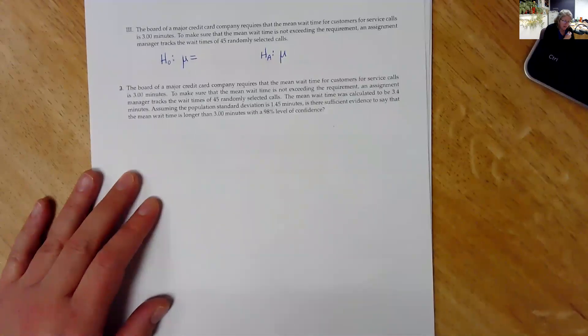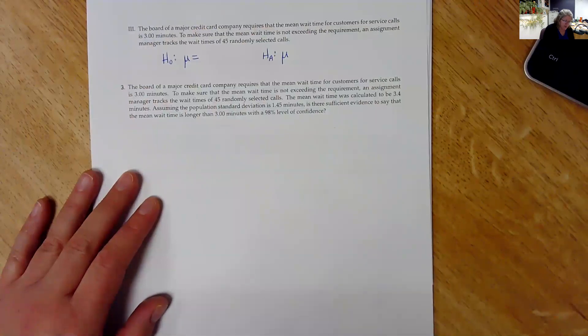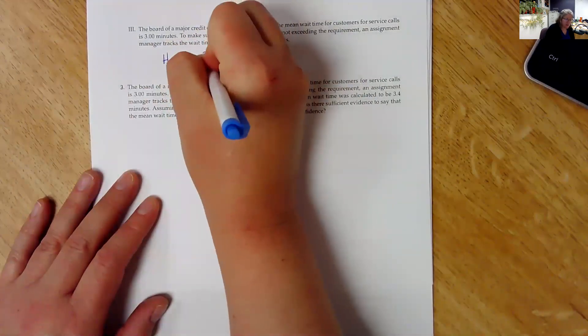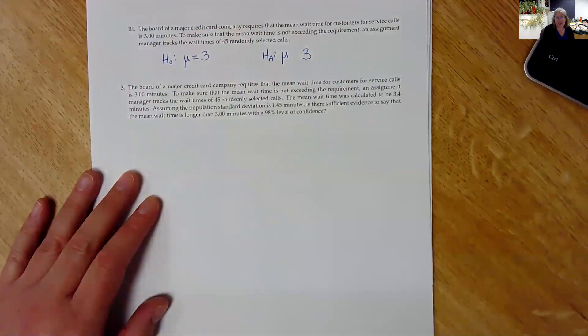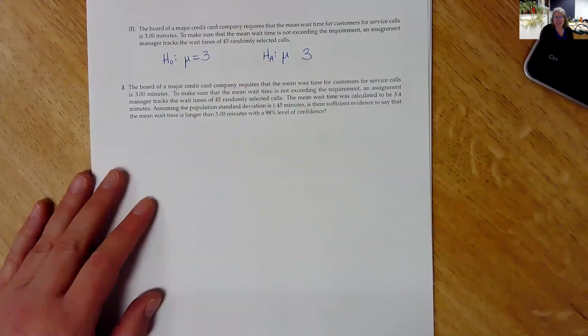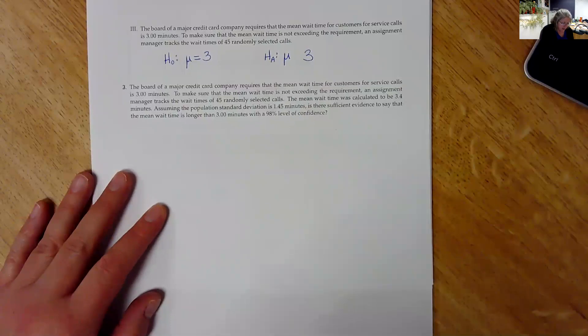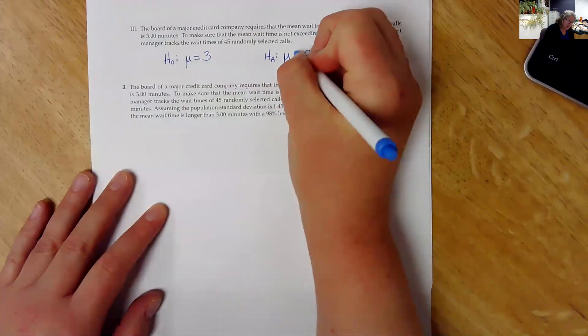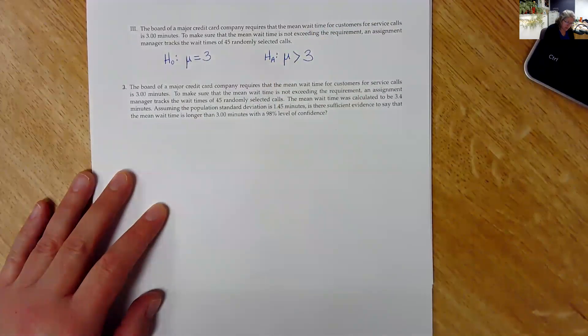So the company claims that the mean wait time is three minutes. So mu is equal to three. And I know that the alternative also is going to use a three. So now I just need the symbol here. So they want to make sure that the mean wait time is not exceeding the requirement. So I'm going to use a greater than symbol here.